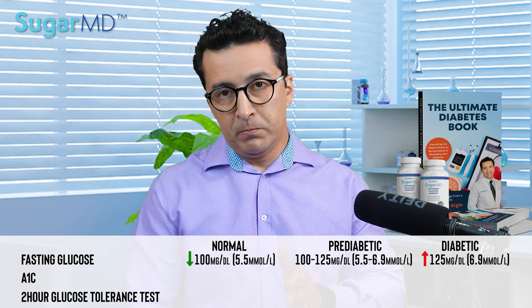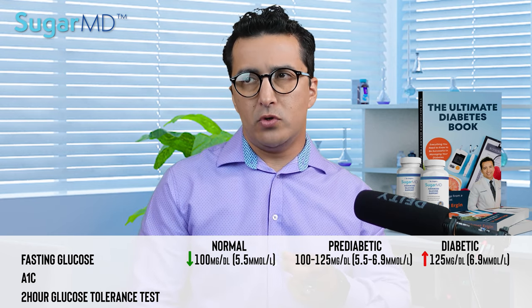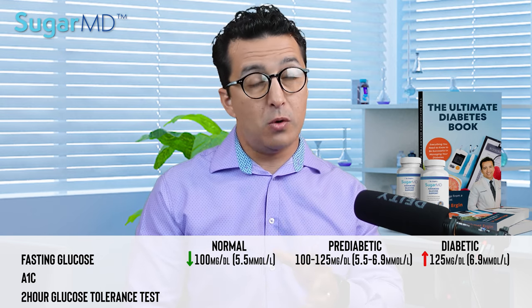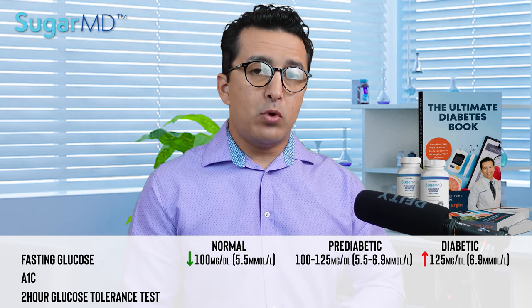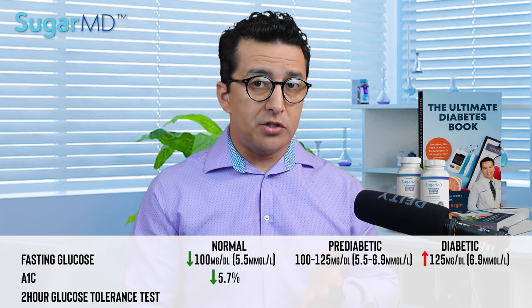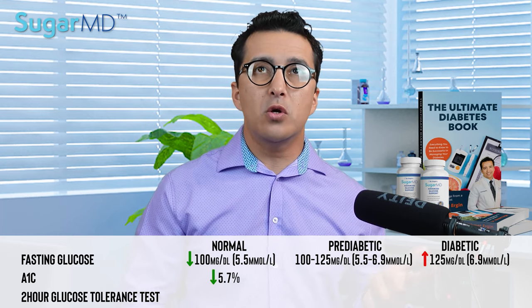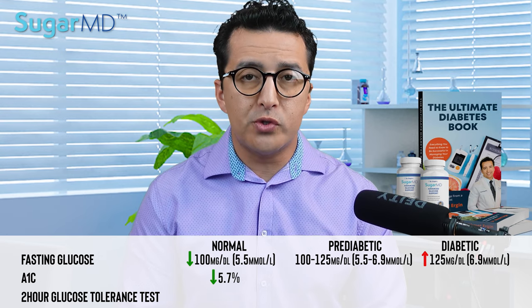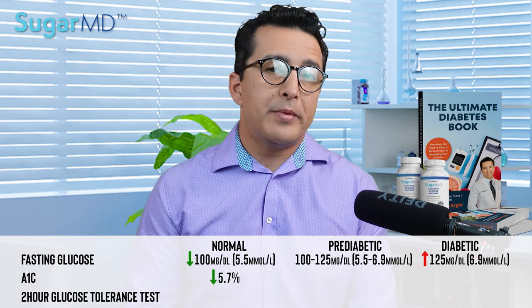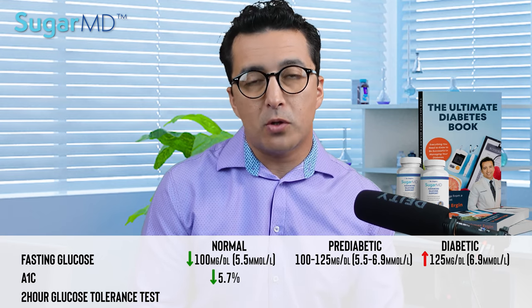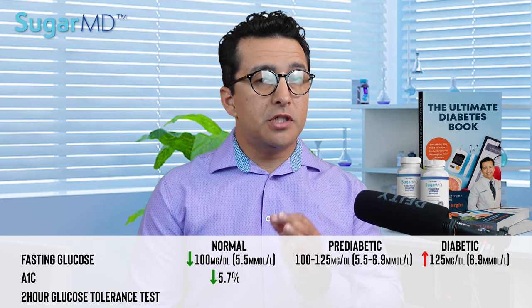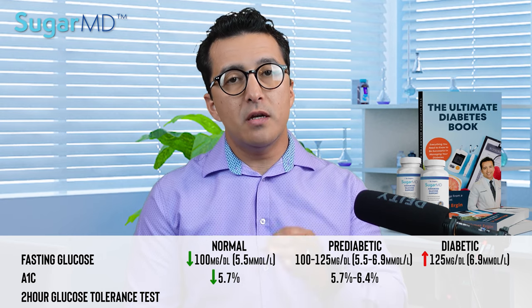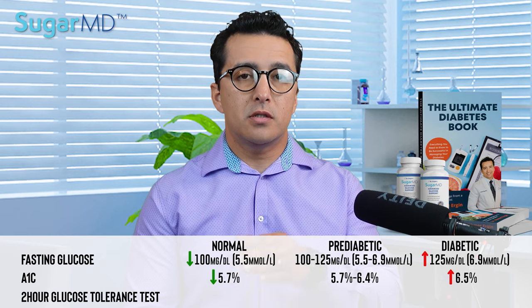Now let's look at A1C. A1C values are represented in percentages, so there are no different unit conversions for European watchers. If A1C is less than 5.7%, that's considered normal. Between 5.7% and 6.4% is considered pre-diabetic. And 6.5% and above is considered diabetes.